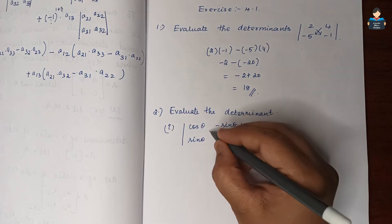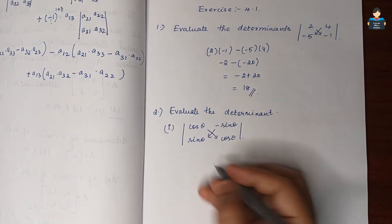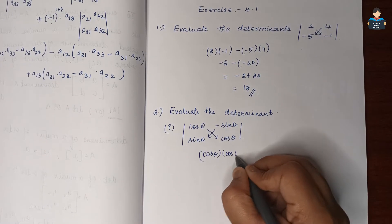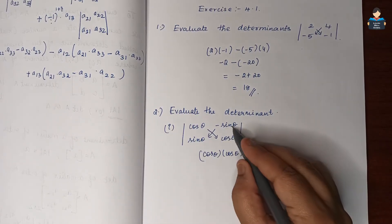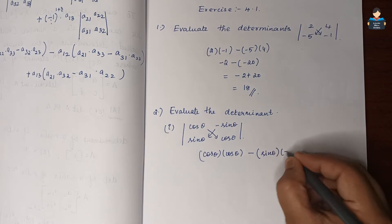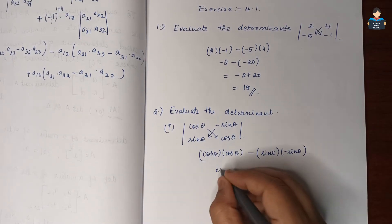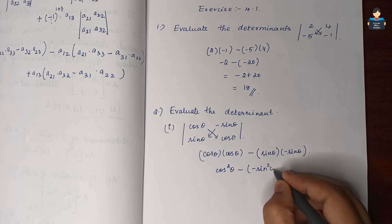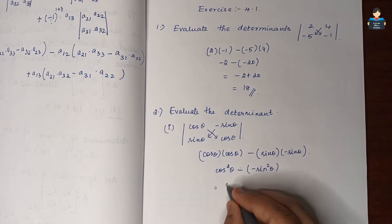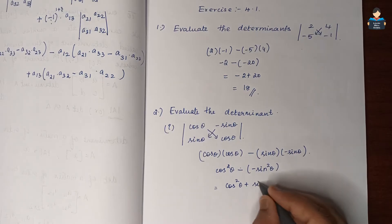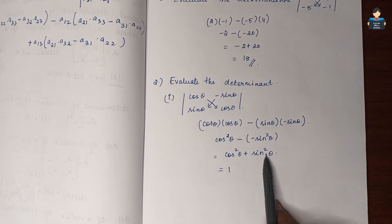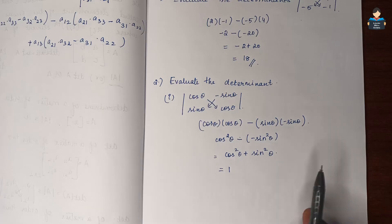Second question: evaluate the determinant. Again multiplying the two diagonals — cos θ into cos θ gives cos²θ, minus sin θ into minus sin θ gives plus sin²θ. So we have cos²θ plus sin²θ, which equals 1 by the standard identity sin²θ + cos²θ = 1. So the answer for the first subdivision is 1.